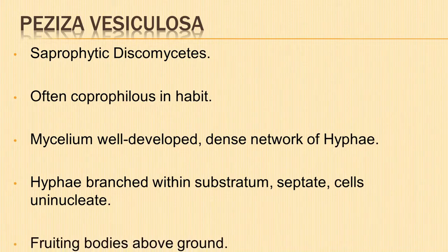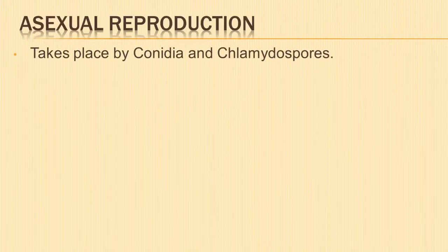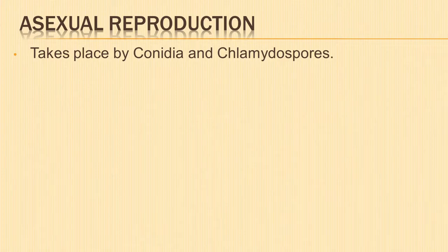The fruiting bodies are above ground. Asexual reproduction in genus Peziza takes place by the formation of non-motile spores, namely conidia and chlamydospores.